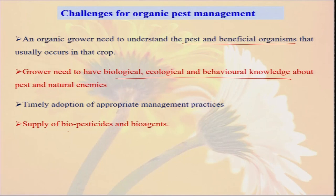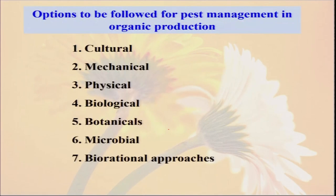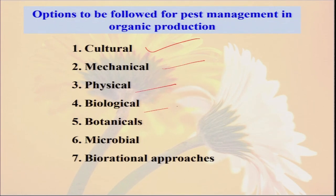We also have to ensure the supply of biopesticides and bio agents. The different types of options we should follow in organic pest and disease management are: cultural, mechanical, physical, biological, botanical, microbial, and bio-rational.